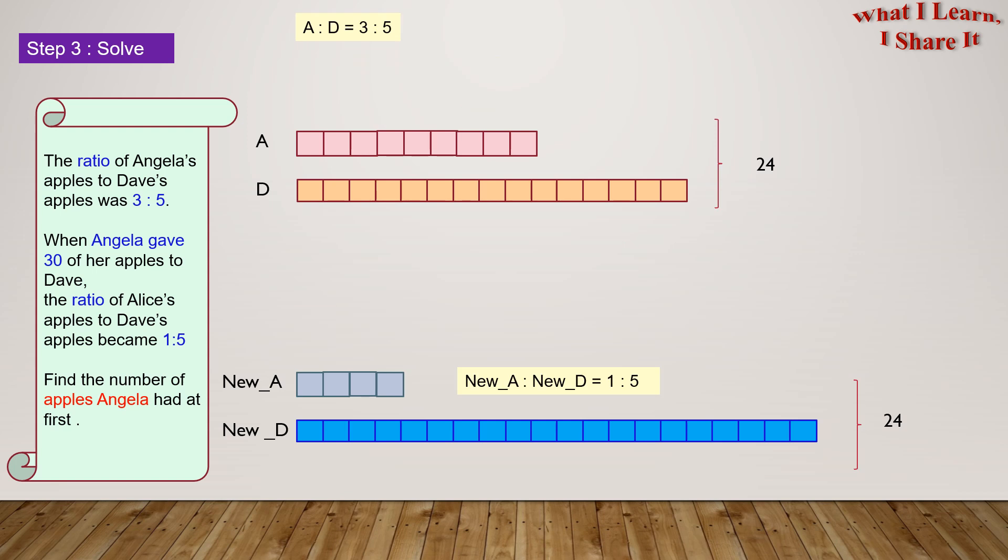What we understand from this model is that Angela had 9 units to begin with, so she was left with 4 units after the transfer. Dave had 15 units to begin with, and he had 20 units in the end.